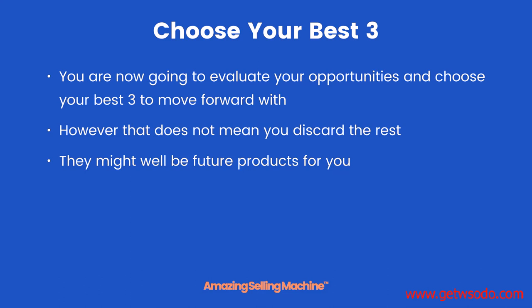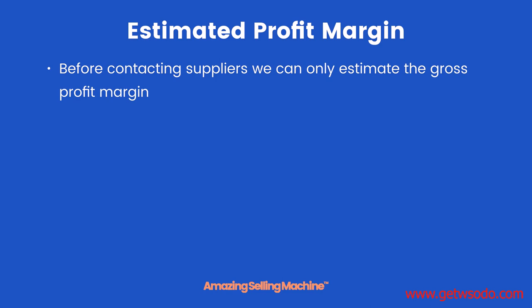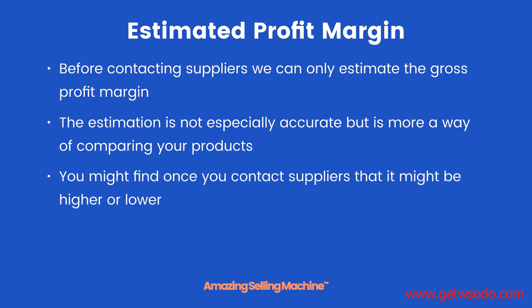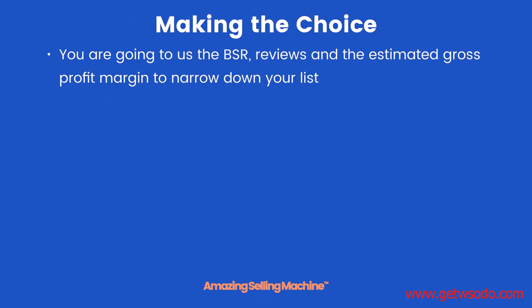If they match all the criteria then they are going to be viable products for you moving forward, and you have worked hard to build this list so there is no need to discard it. Before contacting suppliers, we can only estimate the gross profit margin — the estimation is not especially accurate but is more a way of helping to compare your products. You might find once you contact suppliers that it might be higher or lower, and you'll discover that in the next module. You are going to use the BSR, the reviews, and the estimated gross profit margin to narrow down your list.